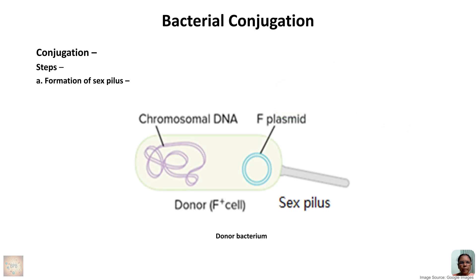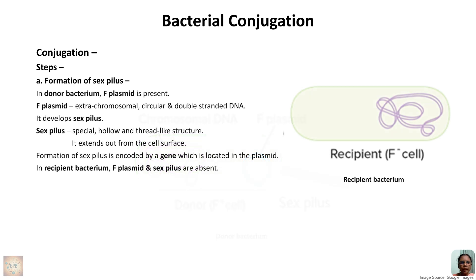The donor bacterium has two special features: the presence of a plasmid and a sex pilus. The long tube-like sex pilus is marked in lavender color, and the plasmid is marked in blue — it is circular, double-stranded, and extra-chromosomal DNA. Chromosomal DNA is present in all bacteria, whereas plasmid and sex pilus are particularly present in the donor (F+) cell. In the recipient cell, plasmid and sex pilus are absent.